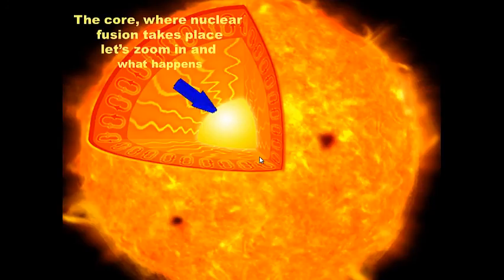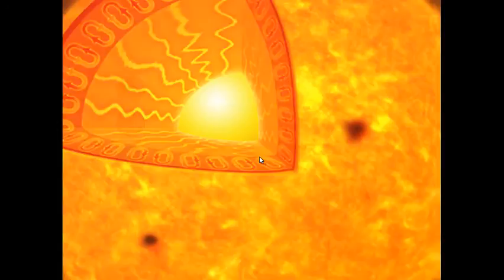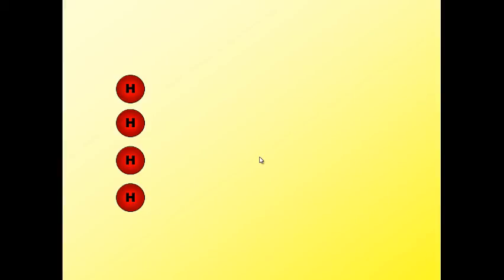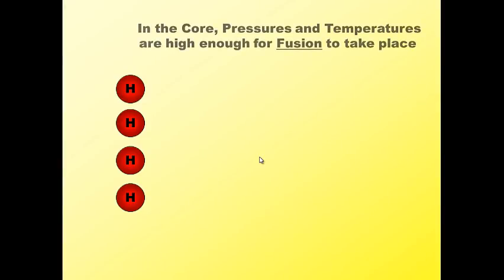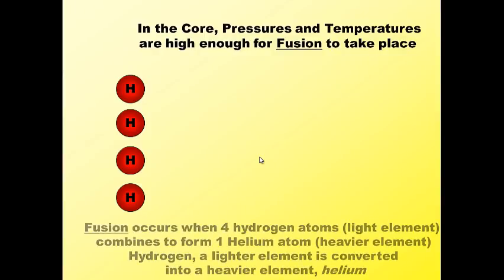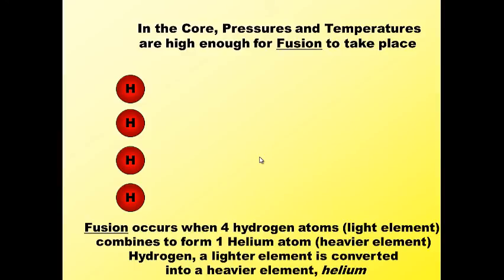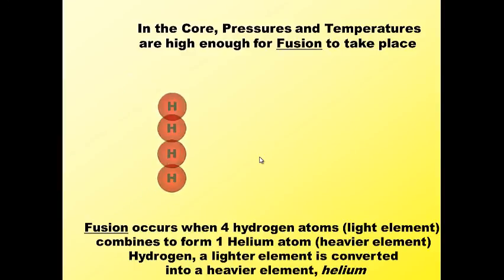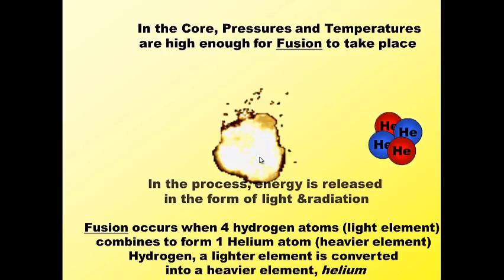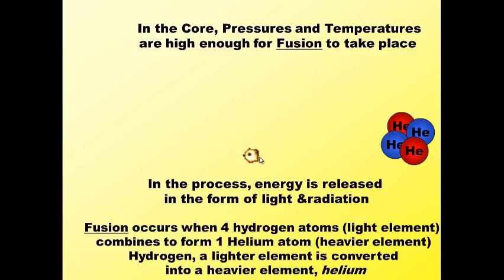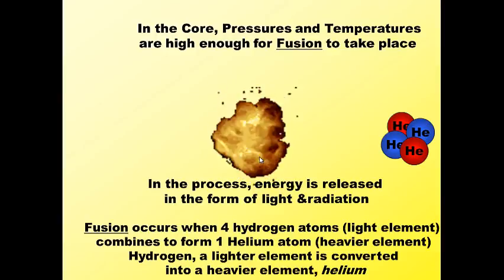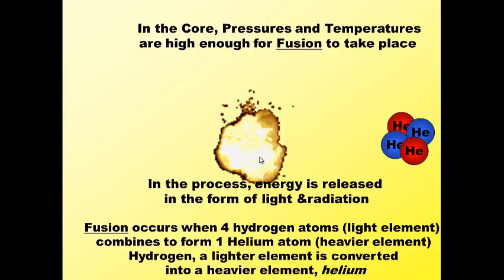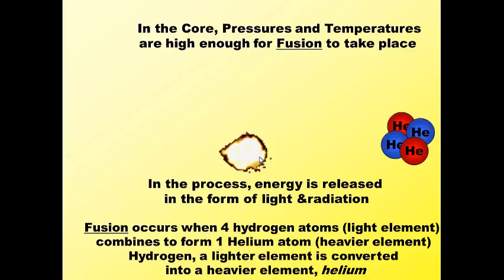The core is where nuclear fusion takes place. In the core, hydrogen atoms are under tremendous pressures and temperatures so high that fusion can occur. Fusion happens when four hydrogen atoms — the lightest element in our universe — combine to form one helium atom, a heavier element, and in the process energy is released in the form of light and radiation. Our Sun is converting hydrogen into the new element helium right now.